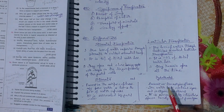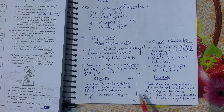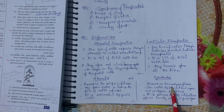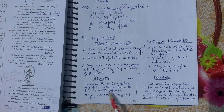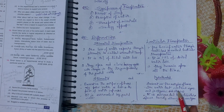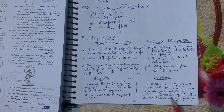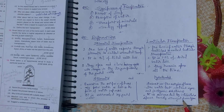Stomata vs. hydathodes: stomata are present on the surface of the leaves; hydathodes are present on the margins of the leaves. Through stomata, only pure water is lost as water vapor. Through hydathodes, water lost contains organic and inorganic substances. Stomata are surrounded by guard cells; hydathodes are surrounded by loosely arranged parenchymatous intracellular spaces.